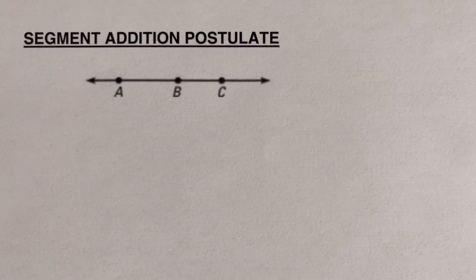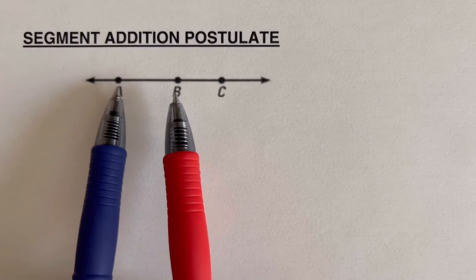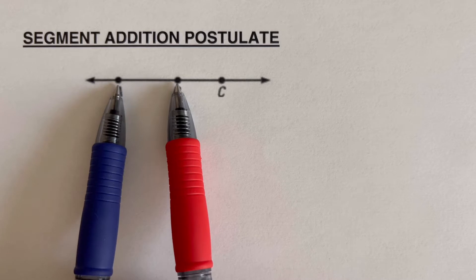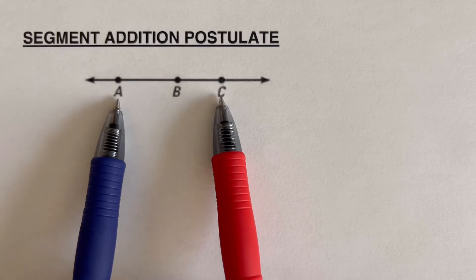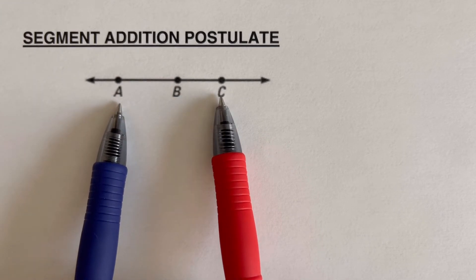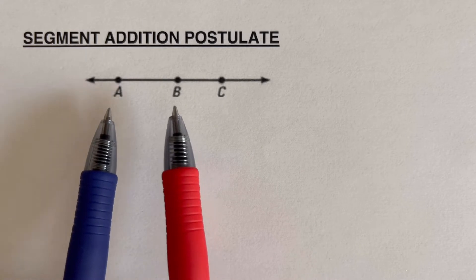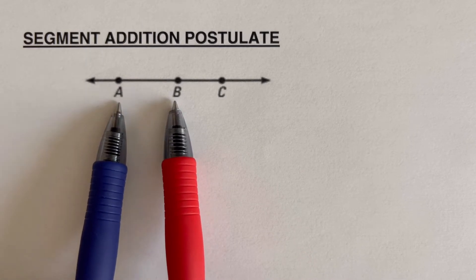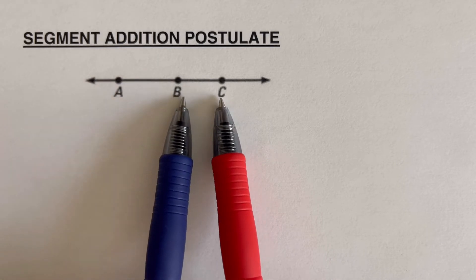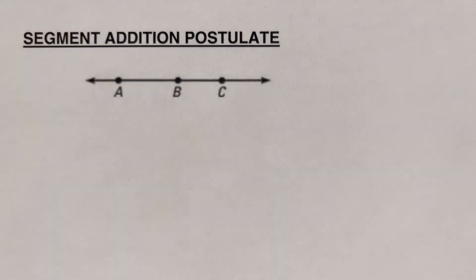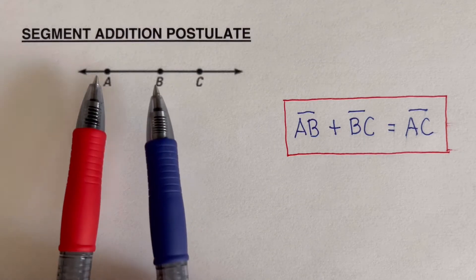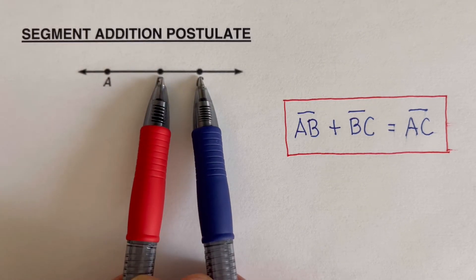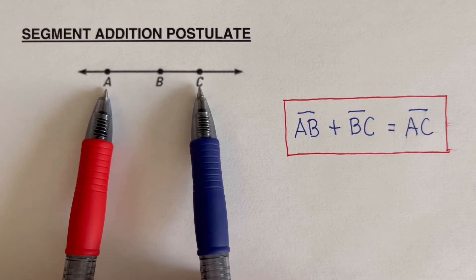Looking at this picture, this line has been chopped into different line segments. The first segment is AB, we also have segment BC, and we also have segment AC. The segment addition postulate states that if we add these two segments, AB plus BC, that gives the whole thing, AC.